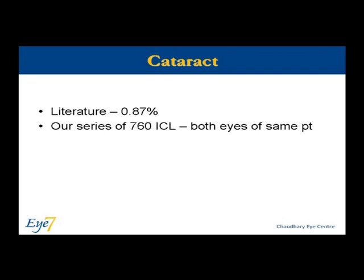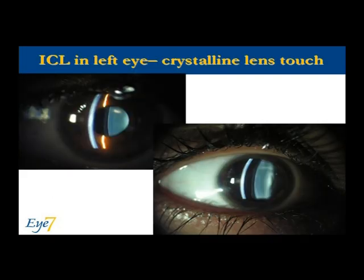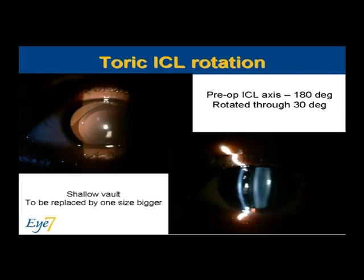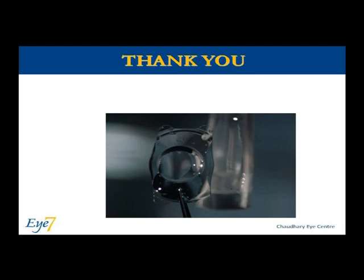The incidence of cataract reported in literature following ICL use is under 1%, and in our centre with more than 760 ICLs implanted, we have seen two cases of cataract, both in the two eyes of the same patient. This image shows contact between the ICL and the crystalline lens. This clinical photograph shows a rotated ICL which had to be replaced by a bigger one in order to compensate for the shallow vaults. Thank you.